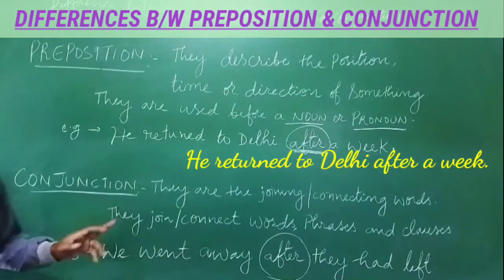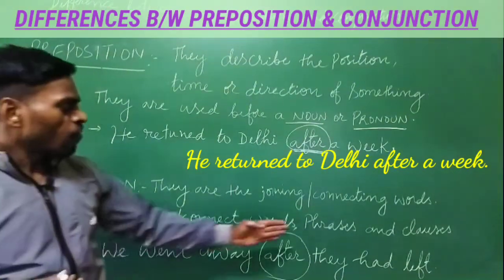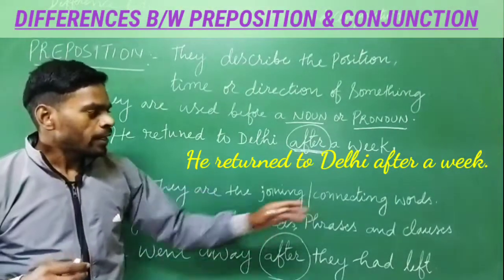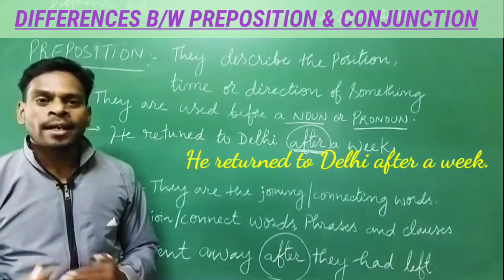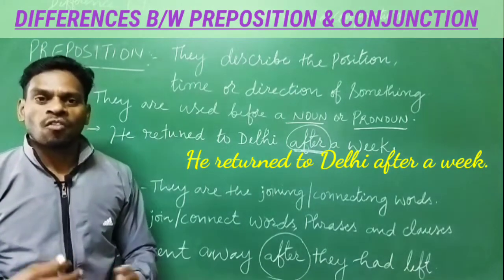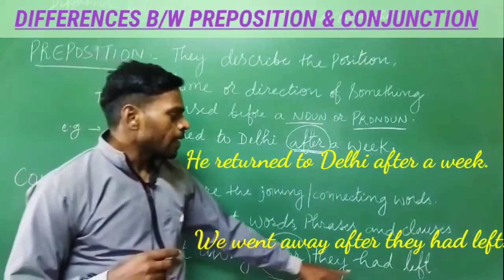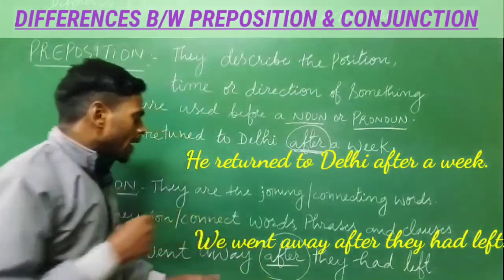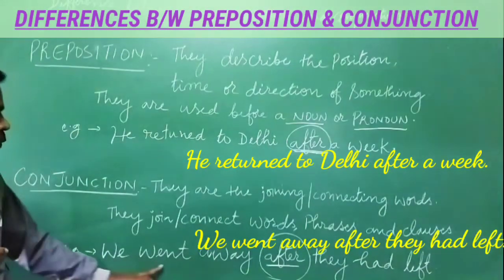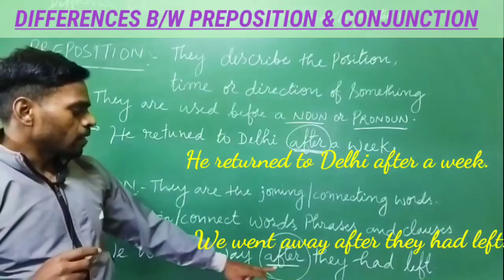Whereas a conjunction is a word that joins or connects two sentences, group of words, phrases, or clauses. They are joining words or connecting words — that is why they are also known as connectors. For example: 'We went away after they had left.' Here, 'after' is used as a conjunction because it is connecting two sentences: 'We went away' and 'They had left.'